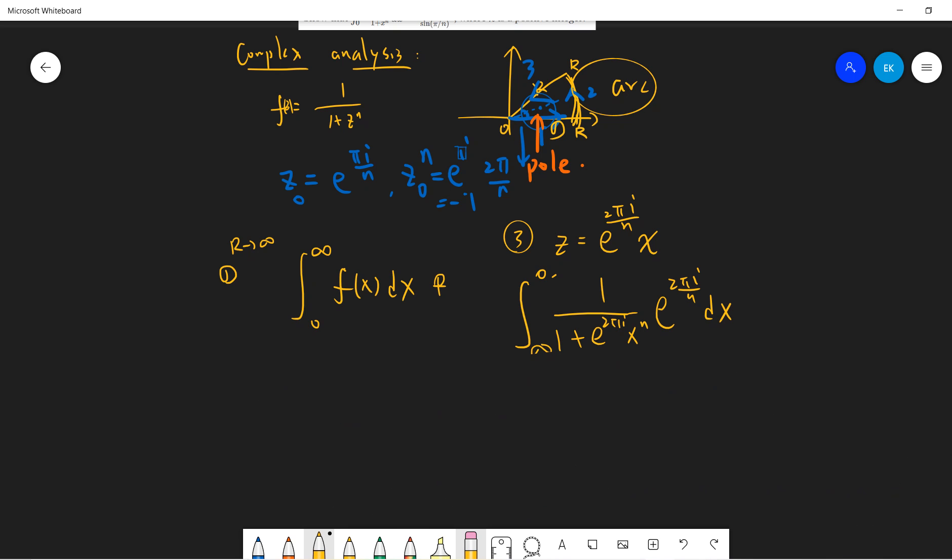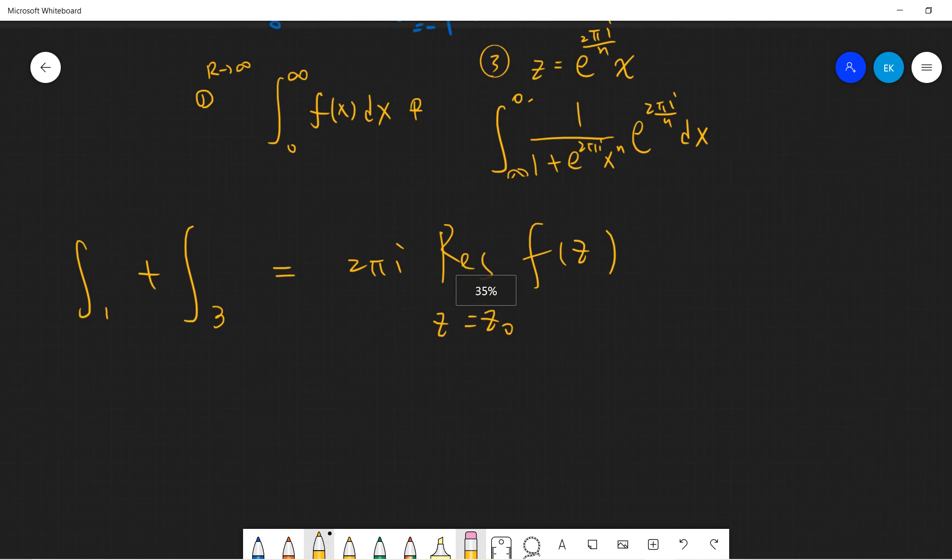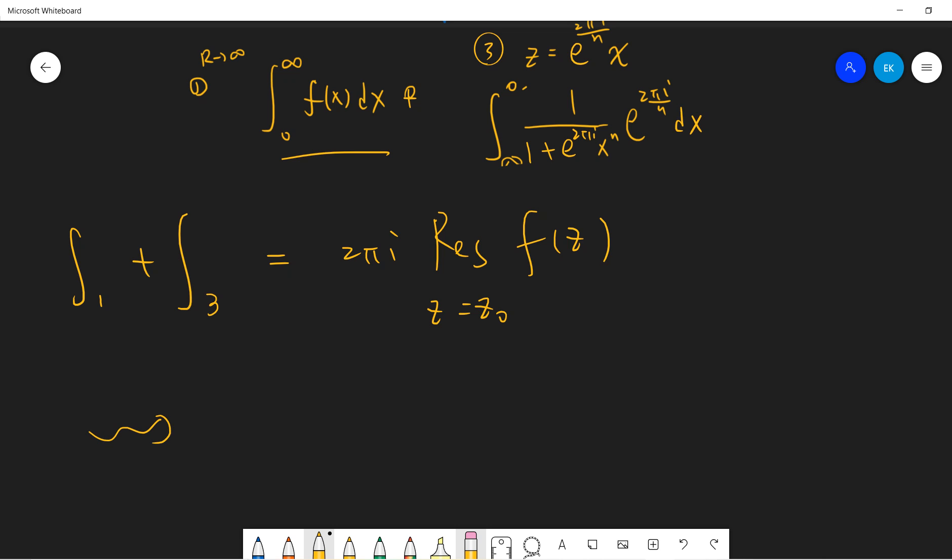So the first, the integral integration is 1, 2, 3. 1 plus 3 equals to 2 pi i residue of f of z, when z is equal to z0, which is exponential pi i divided by n. So these two parts addition is 0 to infinity, 1 over 1 plus x to n dx. So this term is the same. This term contains additional factor and infinity to 0. So it's minus exponential 2 pi i divided by n, equals to z0. So let's take the residue.